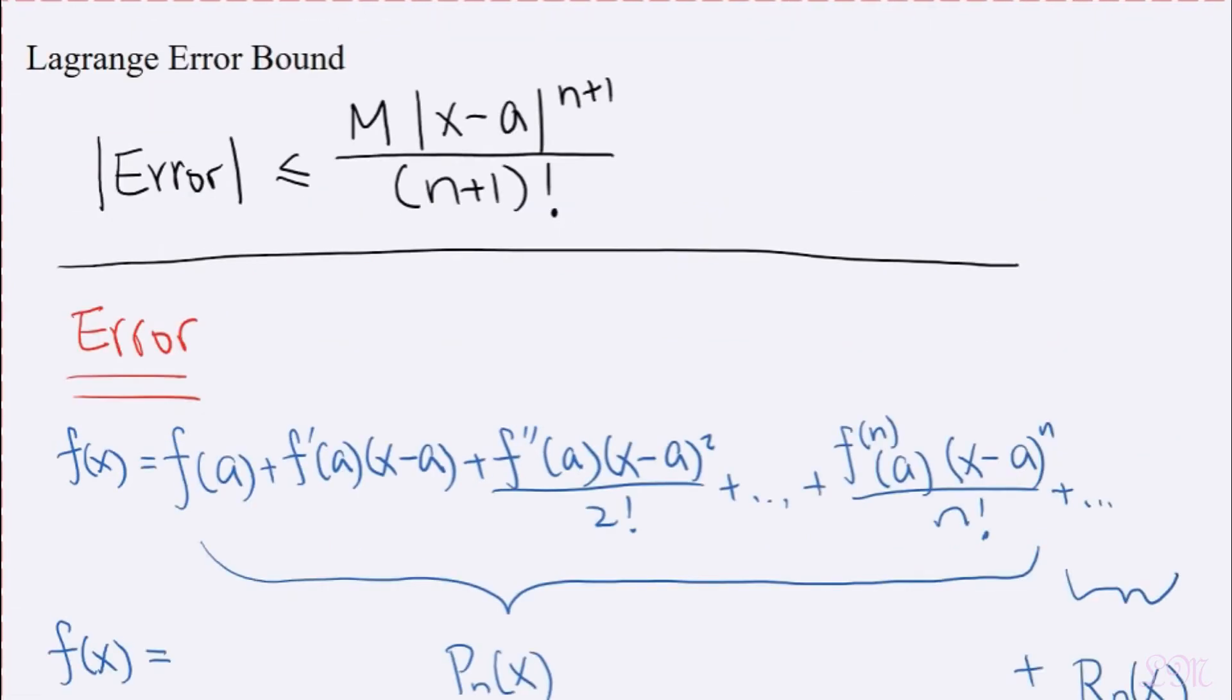So the Lagrange error bound really doesn't tell you the exact value of the error, but rather it only gives you an upper bound of the error. Think about it, it should make sense, right? Because if there were this magical formula that could give you the exact value of the error, then you could find the exact value of your f of x, so there would be no need for approximation.